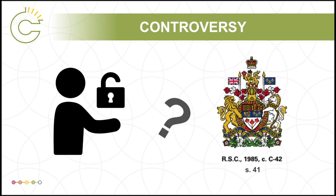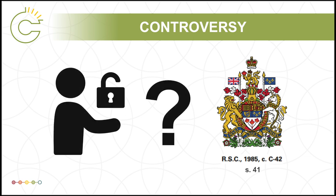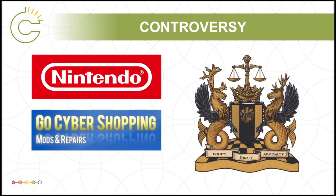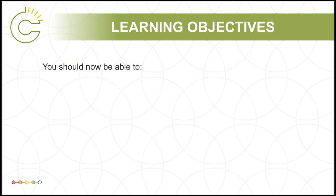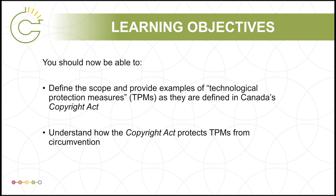While controversy and uncertainty around the TPM provisions in the Act remain, their implementation has had definitive repercussions in court proceedings. To learn how the Canadian federal court's interpretation of TPMs cost a Windsor, Ontario company $12.7 million, please watch our module on the Nintendo v GoCyber case. You should now be able to define the scope and provide examples of technological protection measures as they are defined in Canada's Copyright Act, and understand how the Copyright Act protects TPMs from circumvention.